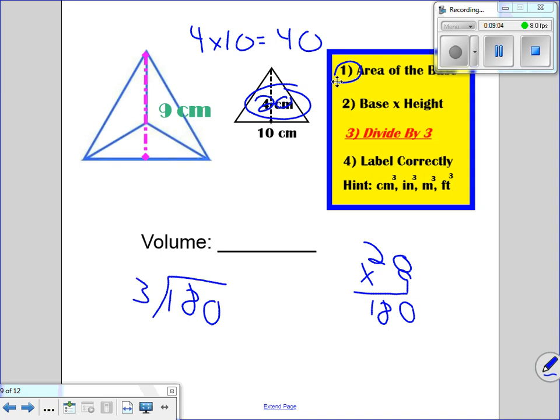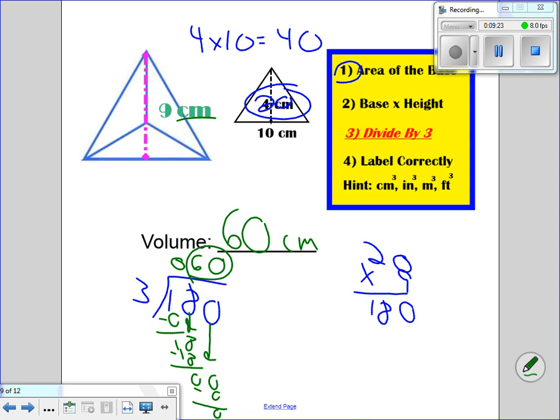3 goes into 1, 0 times. 3 times 0 is 0. Subtract. I get a 1. I'm bringing down this 8. 3 goes into 18, 6 times. 3 times 6 is 18. I'm going to subtract. I get a 0. Bring down the 0. 3 goes into 0, 0 times. Subtract. Get a 0. 60 is my answer. I'm dealing with centimeters cubed.